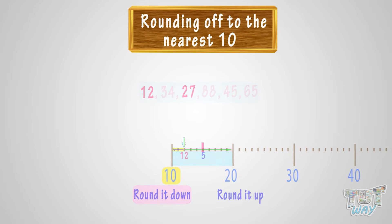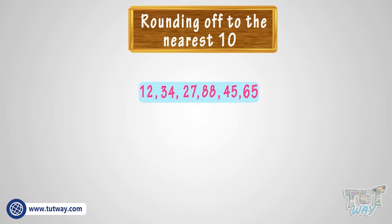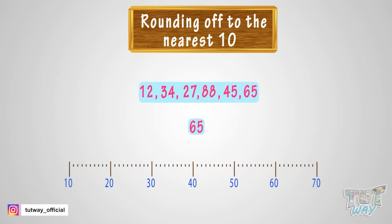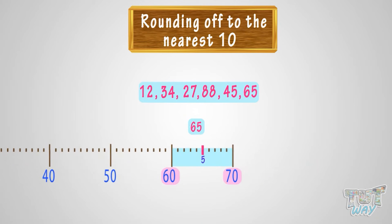Okay, let's take the next number, 65. Where can you fit 65 on this number line? It is somewhere between 60 and 70. Whenever you want to round a number, there are always two options. Either we can round it down to 60 or round it up to 70.